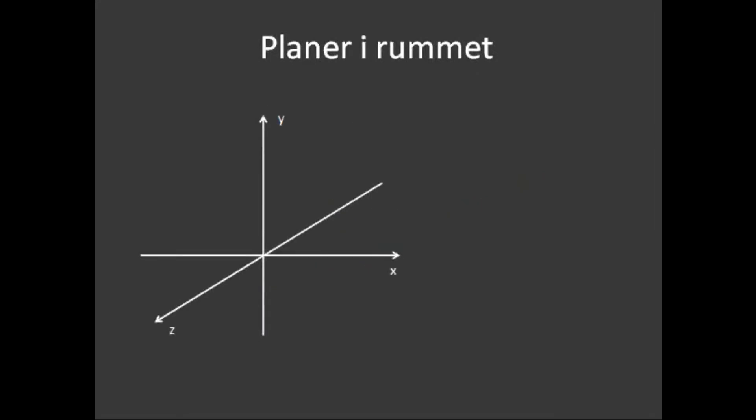Der gælder nemlig, at et kendt punkt samt en normal vektor i en tredimensionel verden også fastlægger en punktmængde. I modsætning til en tredimensionel verden, hvor punktmængden fastlægger en ret linje, som vi så i en tidligere lektion, så fastlægger punktmængden i en tredimensionel verden, altså en plan, som vi skal se.